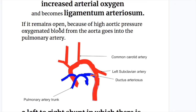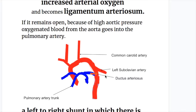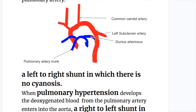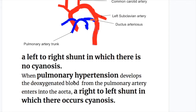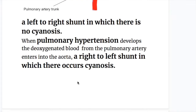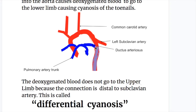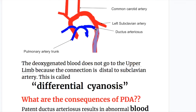If the ductus remains open, because of high aortic pressure, oxygenated blood enters from the aorta into the pulmonary artery. This creates a left-to-right shunt in which there is no cyanosis because oxygenated blood is going from the aorta into the pulmonary artery. When pulmonary hypertension develops, deoxygenated blood from the pulmonary artery enters into the descending aorta, causing a right-to-left shunt that leads to cyanosis.